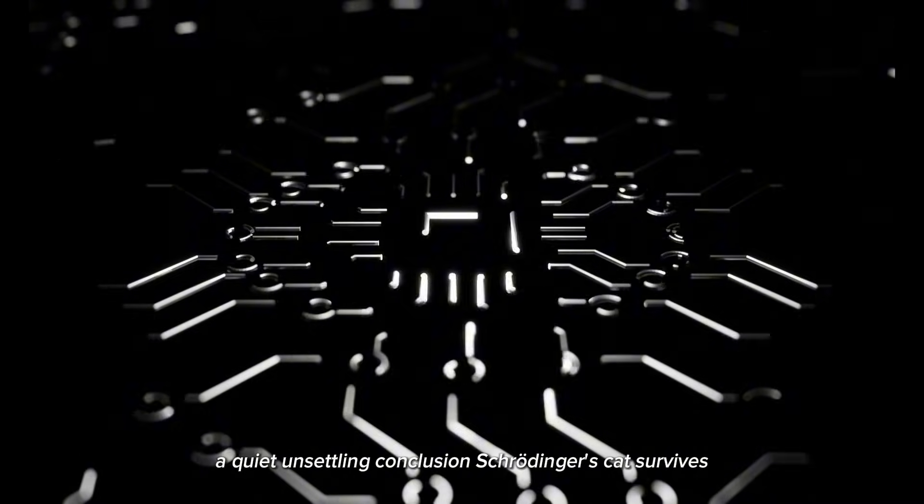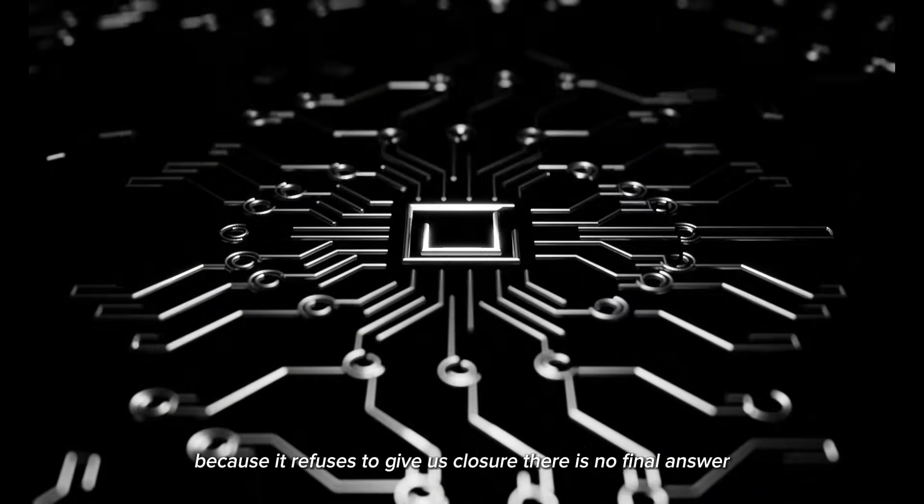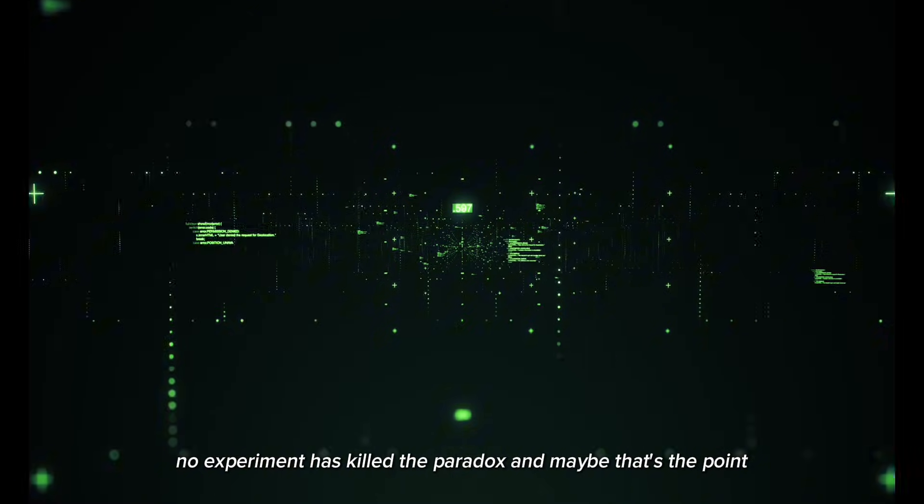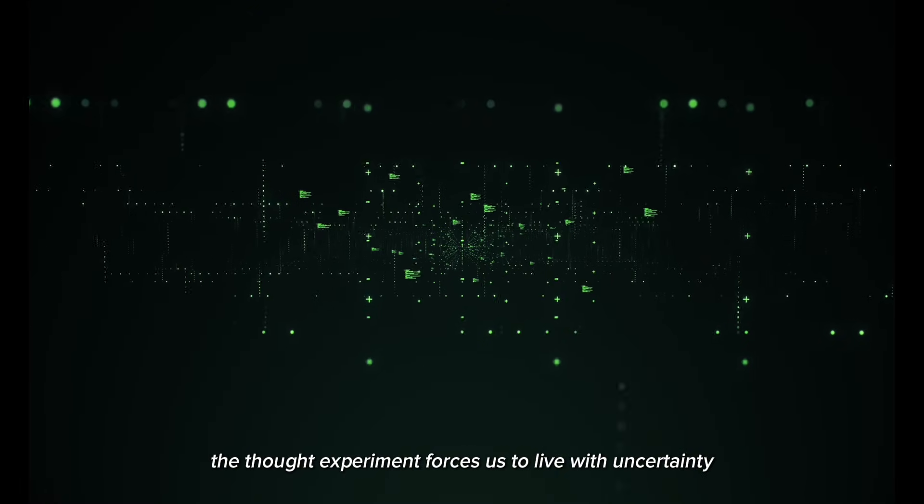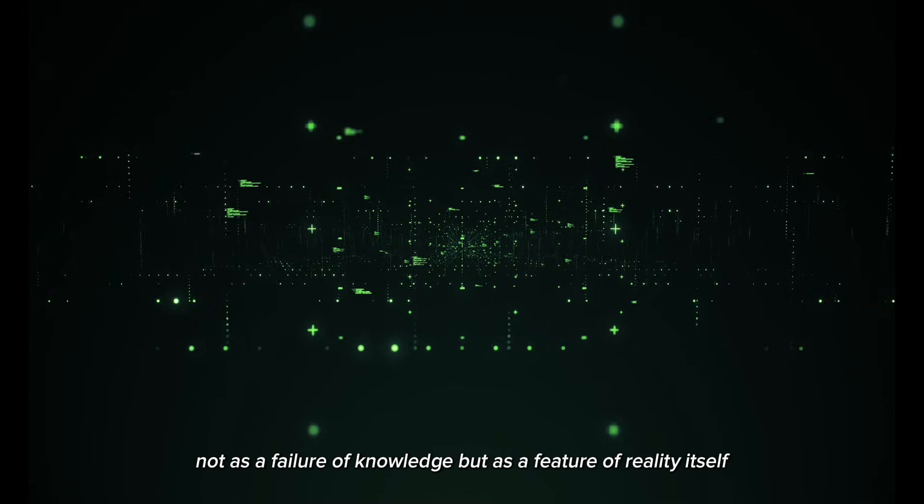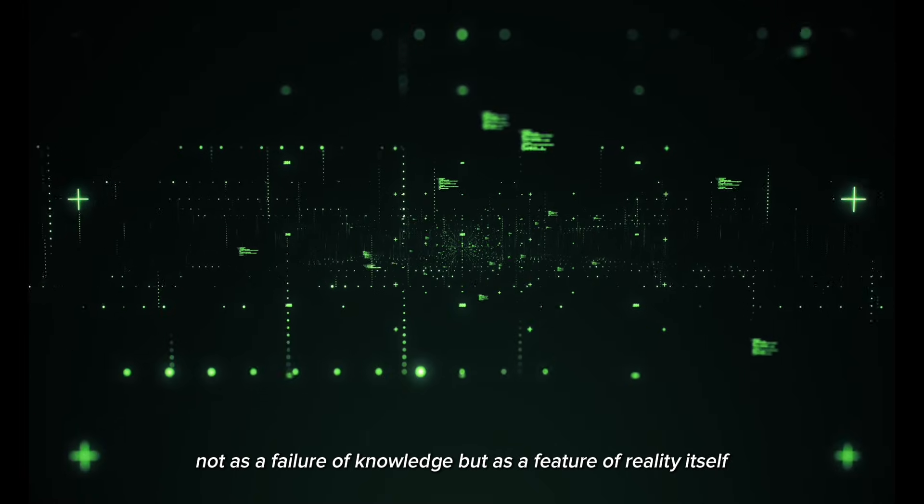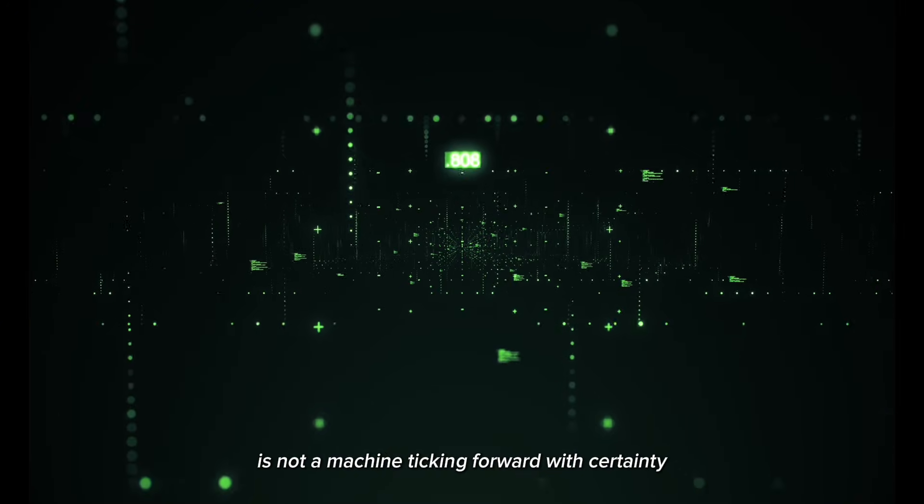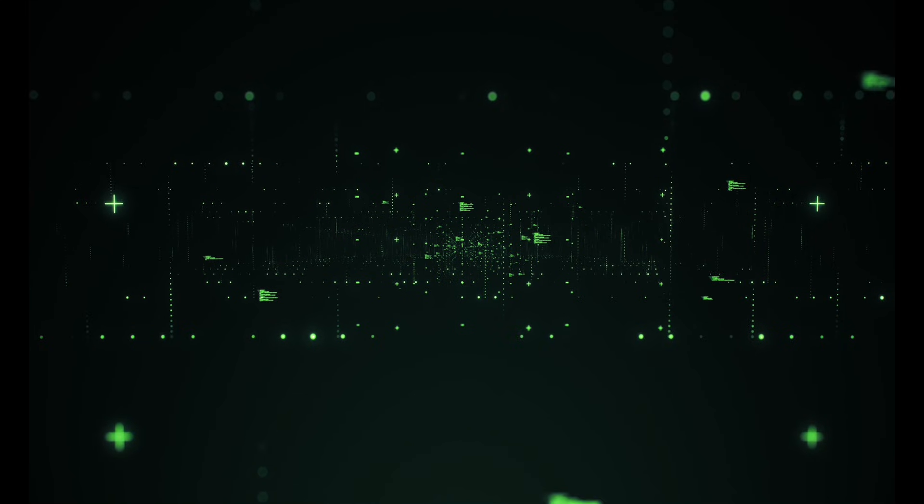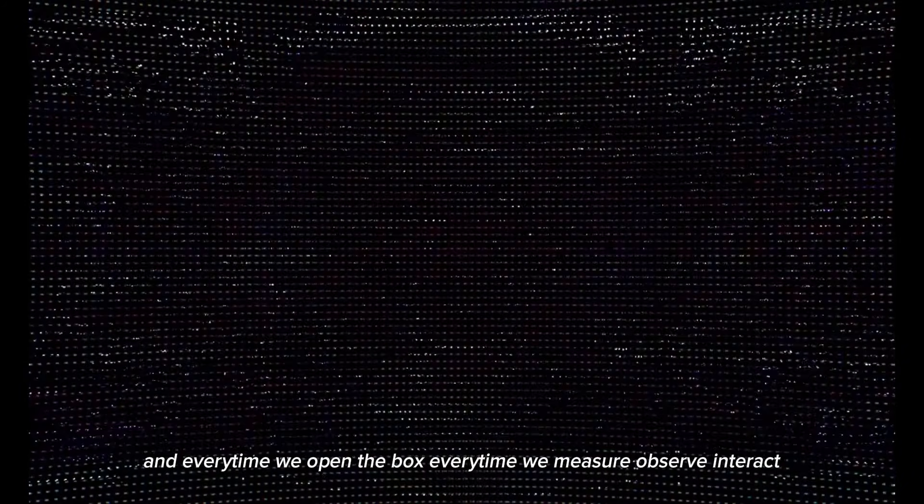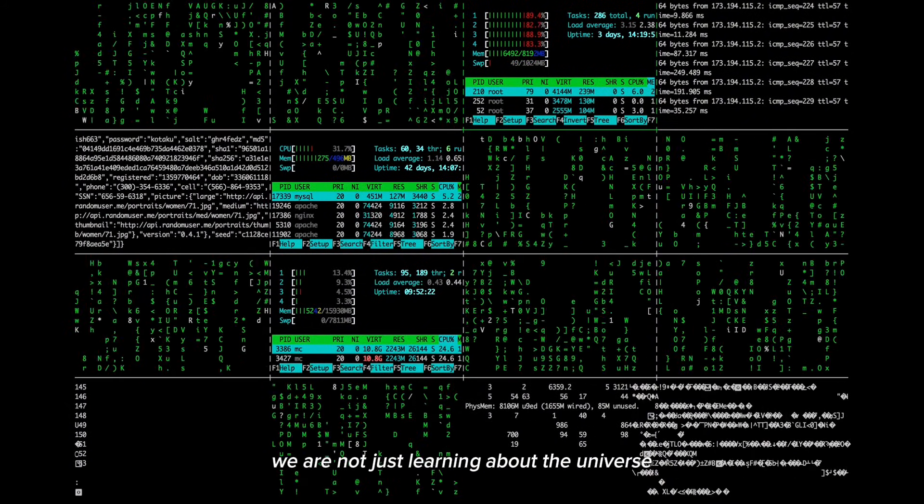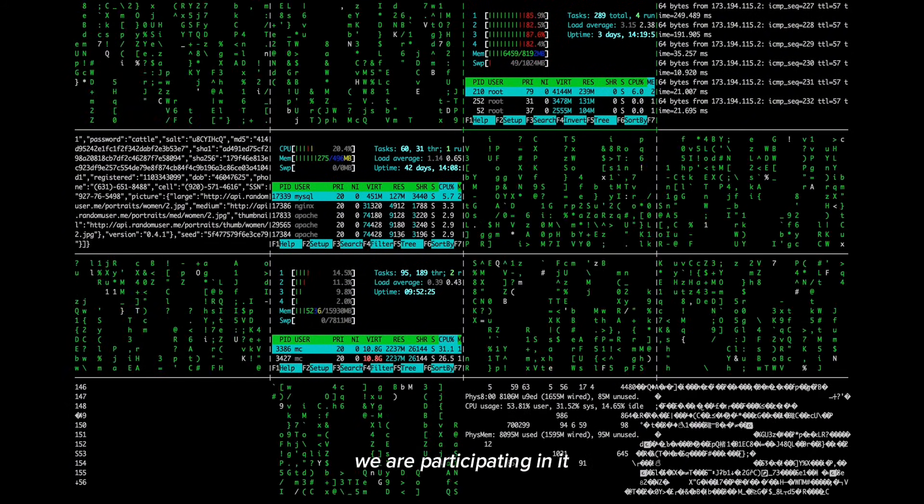A quiet, unsettling conclusion. Schrödinger's cat survives because it refuses to give us closure. There is no final answer. No interpretation has won. No experiment has killed the paradox. And maybe that's the point. The thought experiment forces us to live with uncertainty, not as a failure of knowledge, but as a feature of reality itself. The universe, at its deepest level, is not a machine ticking forward with certainty. It's a field of possibilities, constantly negotiating what becomes real. And every time we open the box, every time we measure, observe, interact, we are not just learning about the universe. We are participating in it.